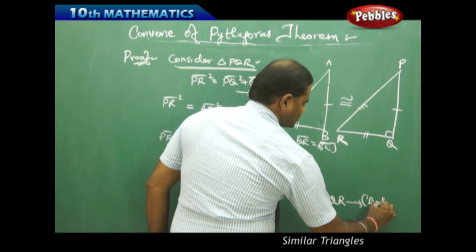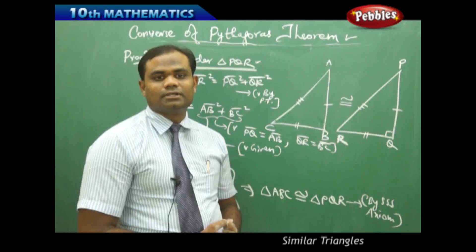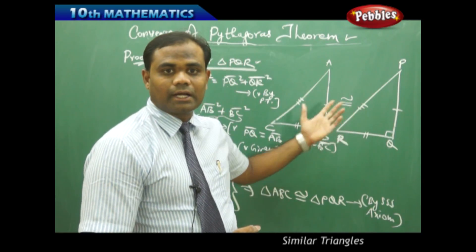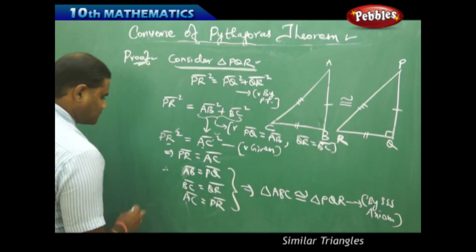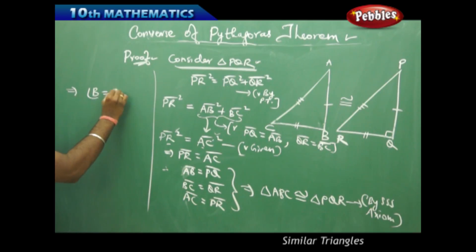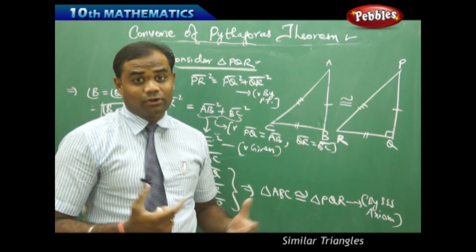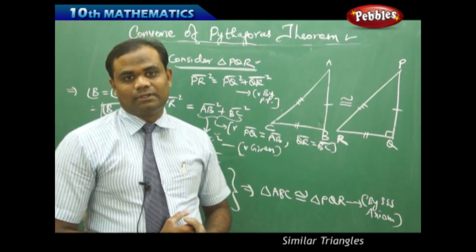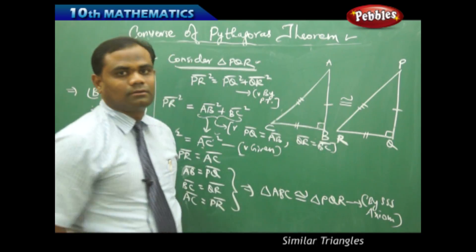By the SSS congruency axiom, triangle ABC is congruent to triangle PQR. Since congruent triangles are equal in all respects, their corresponding angles are equal. Therefore, angle B equals angle Q, which is 90 degrees. This proves the statement of the converse of the Pythagorean theorem: if the square of one side equals the sum of squares of the other two sides, then the angle opposite that side is 90 degrees.